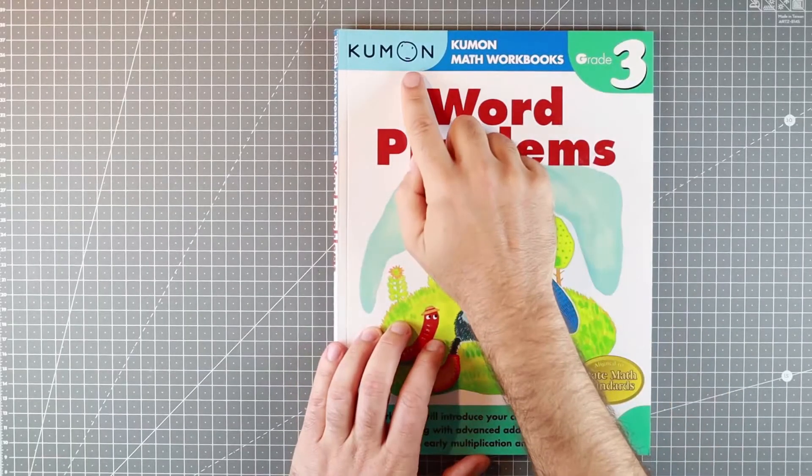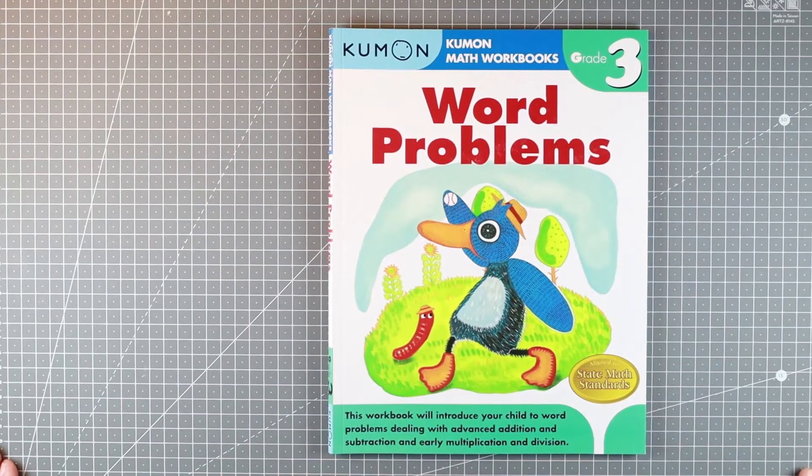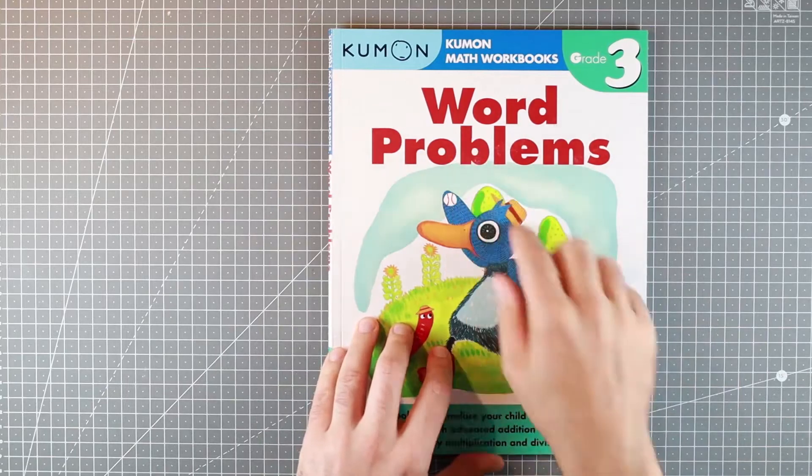More problems for the supposedly smiling child from Kumon. Welcome back to Books for Donkeys. This is grade 3 word problems.